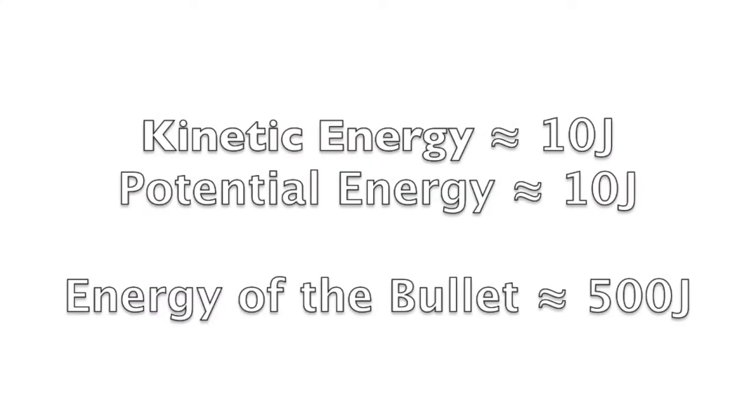When you do rough calculations, you show that the kinetic energy and the potential energy are small compared to the initial energy of the bullet. So where does most of the energy of the bullet go?